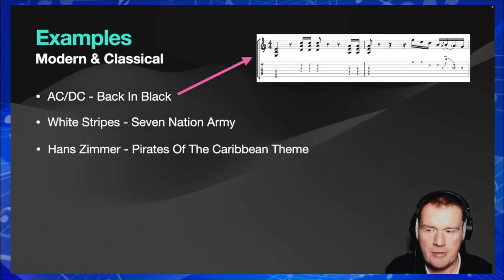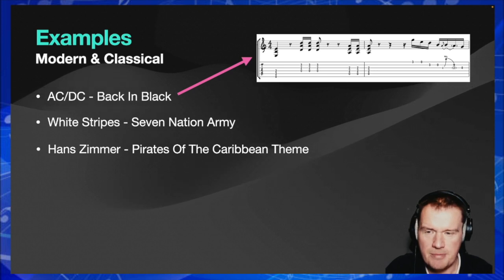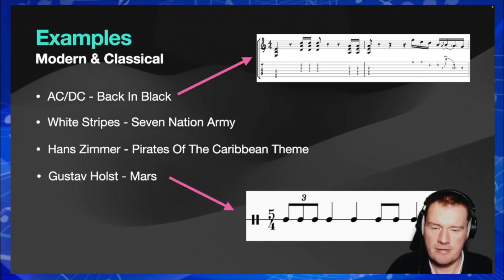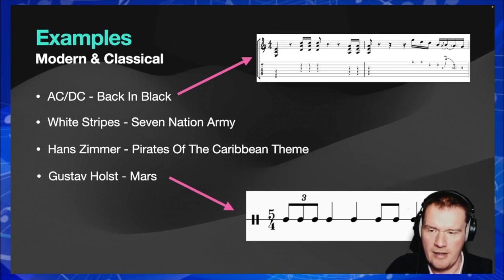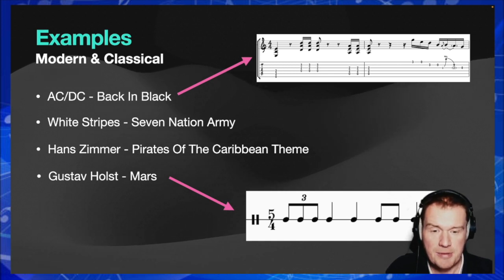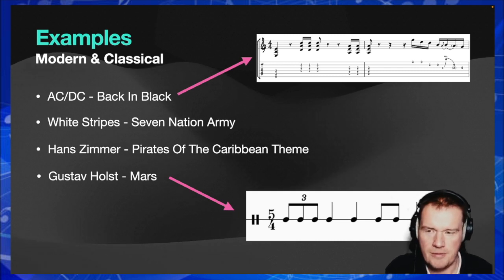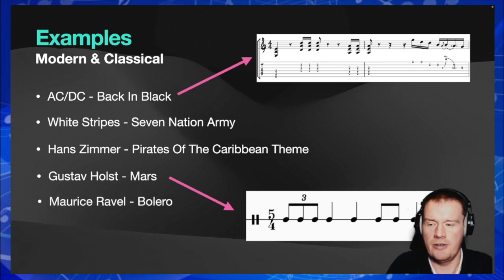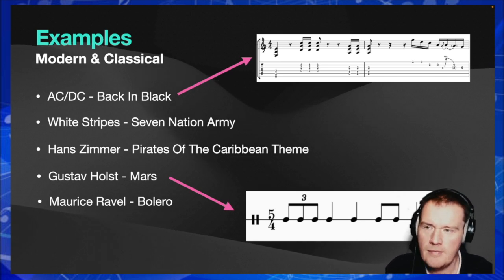Film music was obviously going to feature, so Hans Zimmer's Pirates of the Caribbean theme. Going more classical, Holst's 'Mars' is a really good example of an ostinato. John Williams also liked using this particular ostinato — if you listen to 'Mars' from The Planets Suite you'll hear lots of inspiration that Mr. Williams drew from it. And the last classical example is Ravel's 'Bolero.'